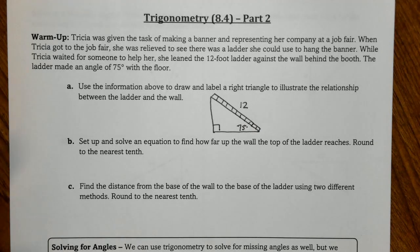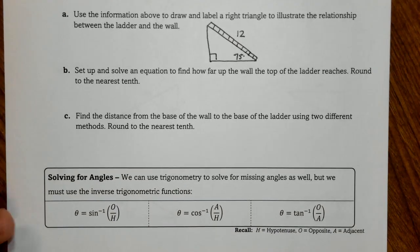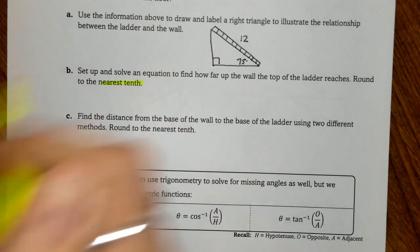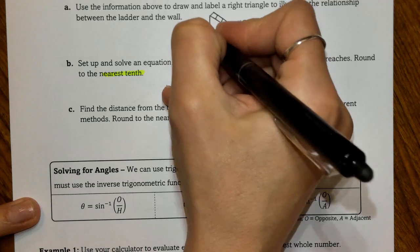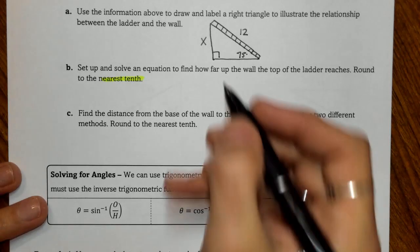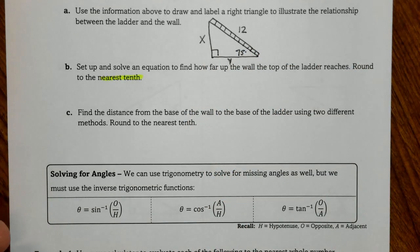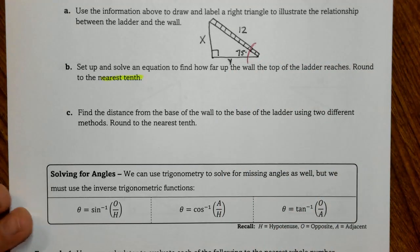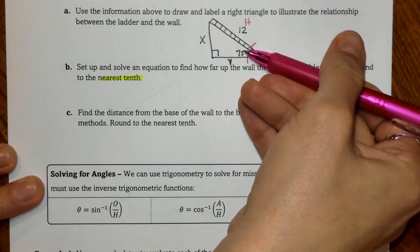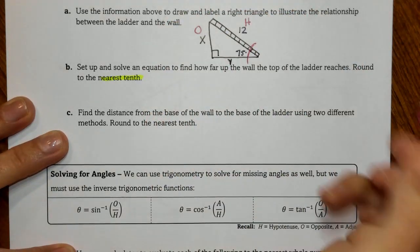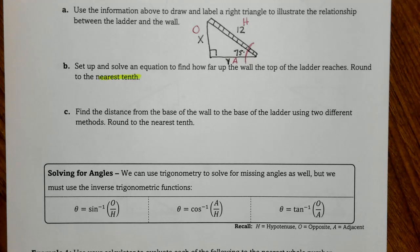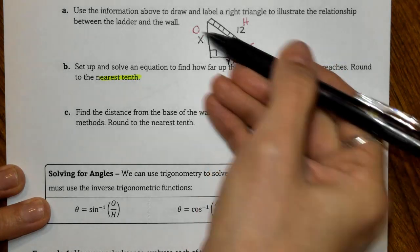Part B says to set up and solve an equation to find how far up the wall the ladder reaches. We're looking for our vertical distance. In this problem we do want to round to the nearest tenth, so on my diagram I'm going to label this as X. For part C, they're going to ask us the distance from the base of the ladder to the wall, so I'm going to label that Y. Now, here's our reference angle, and we want to label our H, O, and A. H for hypotenuse is right here. All the way across to the opposite side will be O, and then adjacent — right next to — is A. To solve for X, or how far up the wall that ladder goes, we will be using the opposite and the hypotenuse.